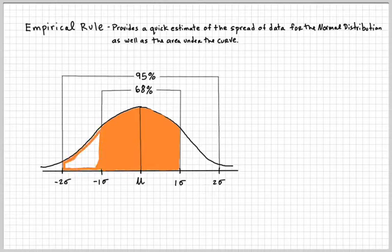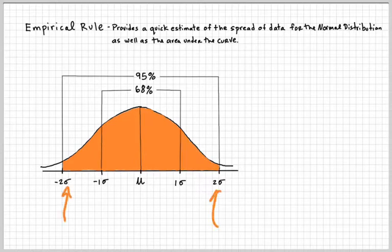If you know where negative two standard deviation is, and you know where positive two standard deviations is located, from here to here, then you know that if you shade between those two areas, you get 95%. And then on the corners, that's 2.5%, and then the other corner is 2.5%.